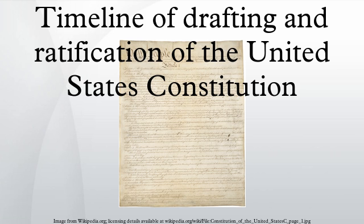March 14: Rhode Island declines to elect delegates to the upcoming Constitutional Convention. April 23: Maryland elects delegates to the upcoming Constitutional Convention.